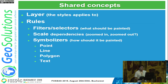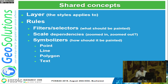This also means that all the styling languages share some concepts. Each styling language contains the notion of a layer that the style applies to, rules with filters or selectors — what should be painted red, what should be painted yellow — scale dependencies for when to paint things, and symbolizers for how to paint a given geometry as a point, line, polygon, or label. These basic concepts apply to all styling languages; everything else is syntax and mechanics.